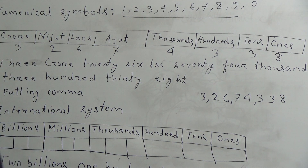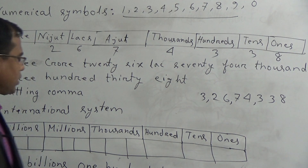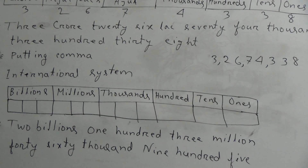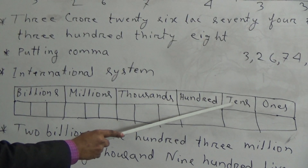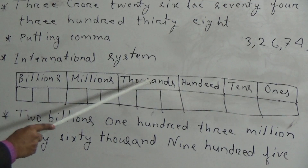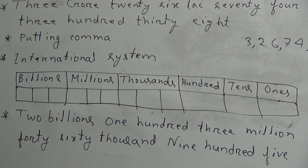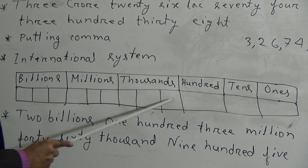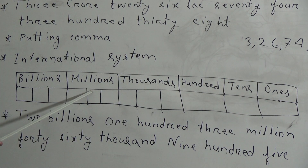Now, dear students, we will learn the international system. In the international system, for expressing any large number, we use a total of 6 place groups. The names of the places are: 1s place, 10s place, 100s place, 1000s place, Millions place, and Billions place. In the 1000s group there are 3 places, in the Millions group there are 3 places, and in the Billions group there are also 3 places.